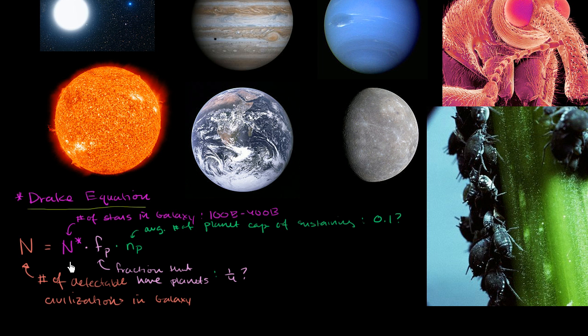Now, and this would give us a total number, because this is average per solar system that has planets. This is the total number of solar systems with planets. You multiply it out, total number of planets in our galaxy capable of sustaining life.